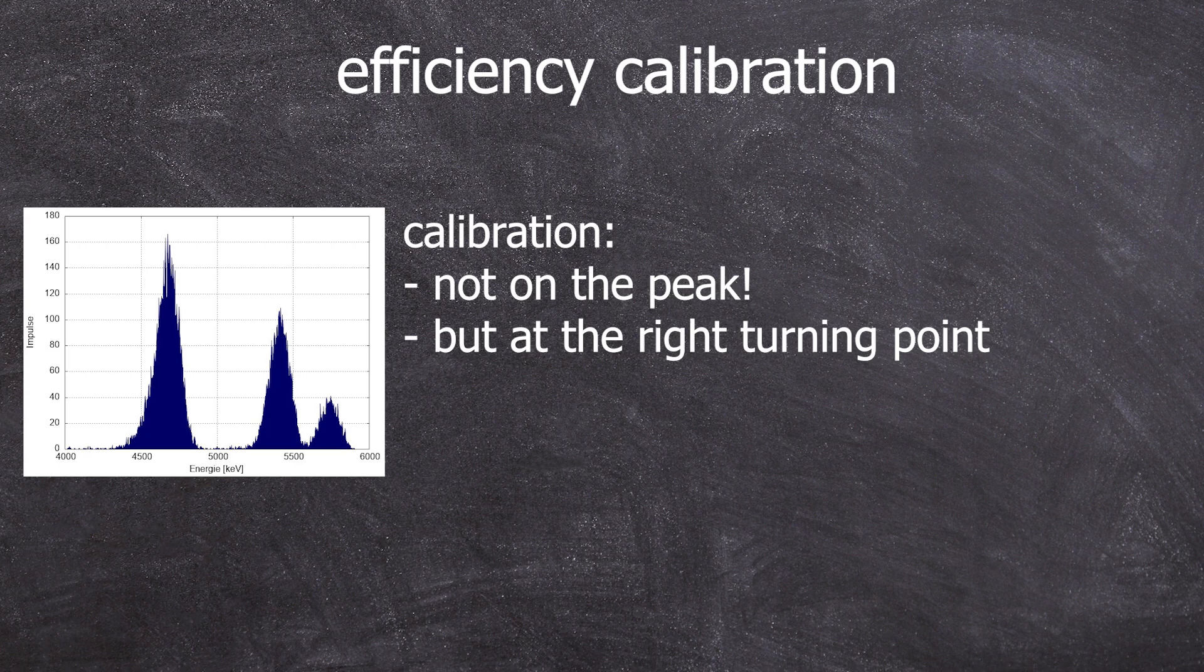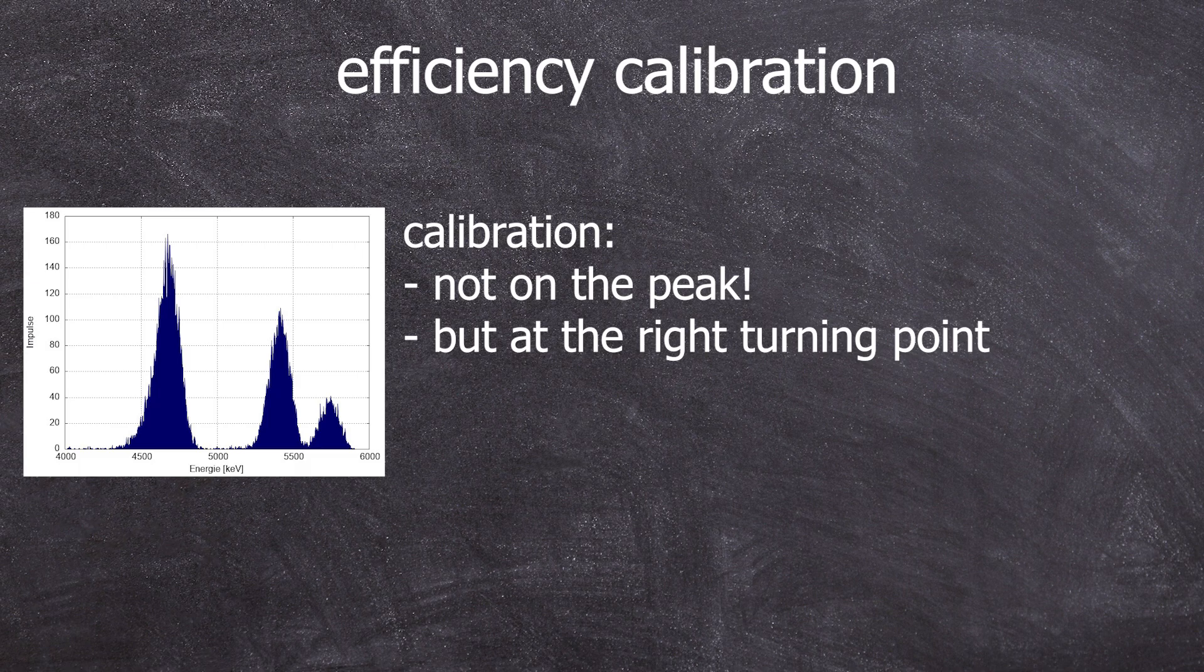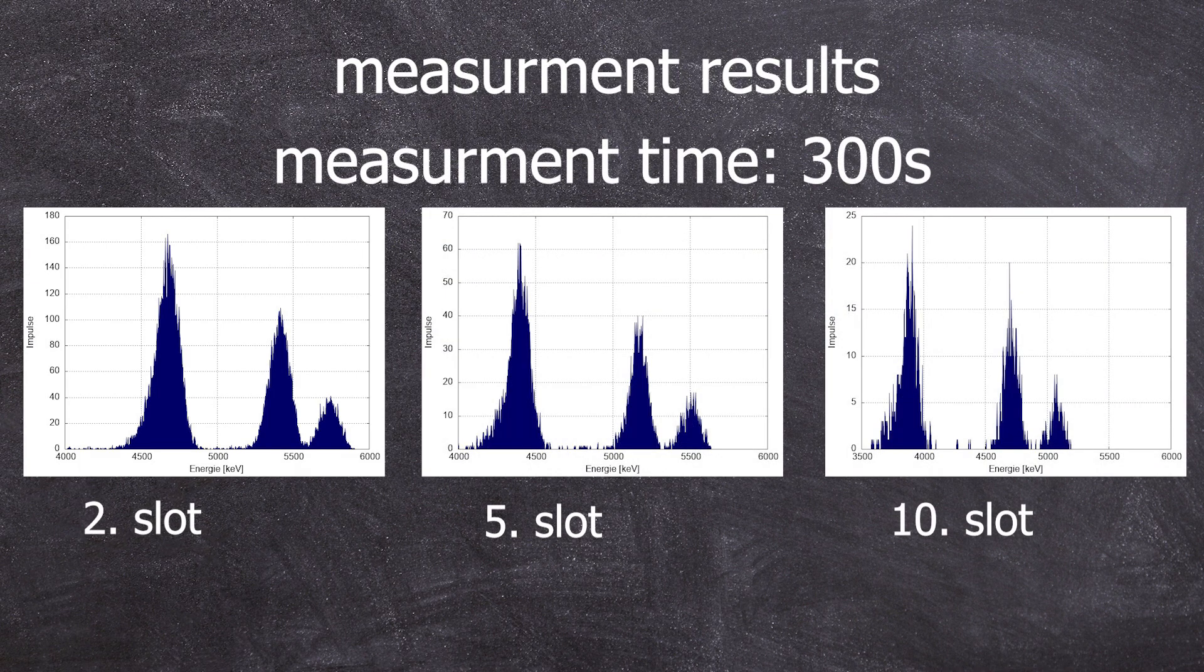It's customary to energy calibrate not on the peak as with the gammas, but on the right inflection point due to the tailing in the low energy range. I perform the energy calibration in the second slot.